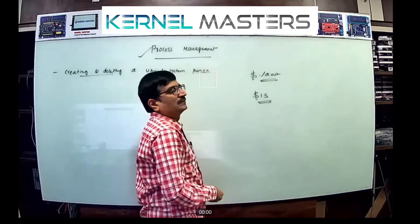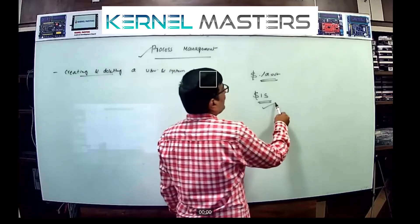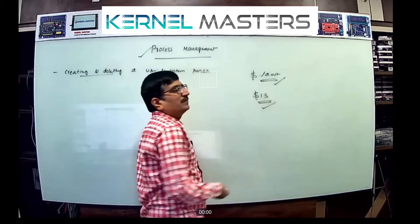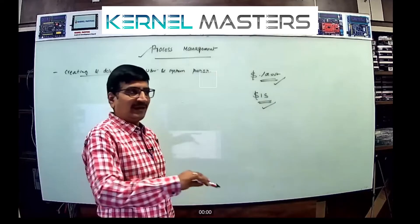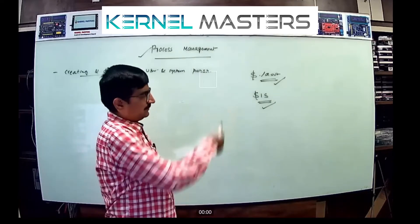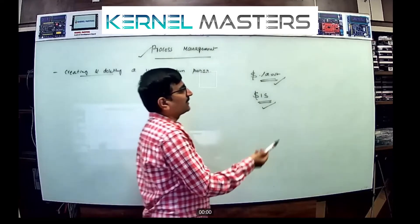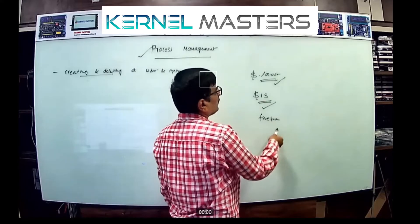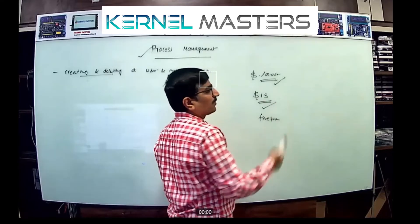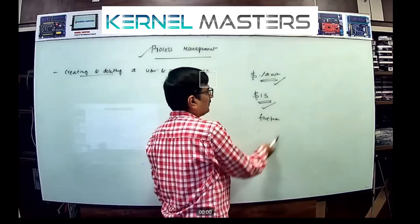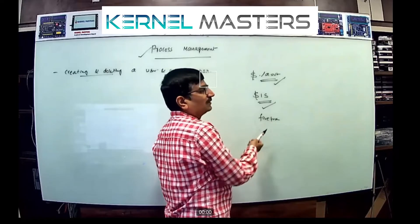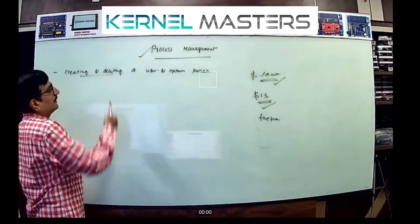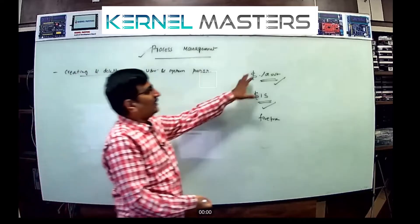System-defined or user-defined — whatever the process, it gets created. For example, a download or a graphical application like Firefox: opening the browser by double-clicking creates a process, and when closed it terminates. So from the user's point of view, processes are created via the command line or graphical interface.